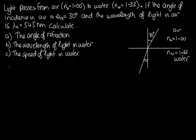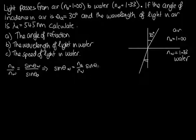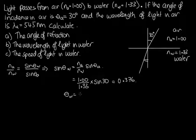Using Snell's law, Nₐ on N_w equals sine θ_w over sine θₐ. Rearranging: sine θ_w equals Nₐ on N_w times sine θₐ. Substituting in Nₐ = 1.00, N_w = 1.33, and times sine 30, solving on the calculator gives 0.376. Taking the inverse sine gives us θ_w equal to 22 degrees. So we've now worked out the angle of refraction.